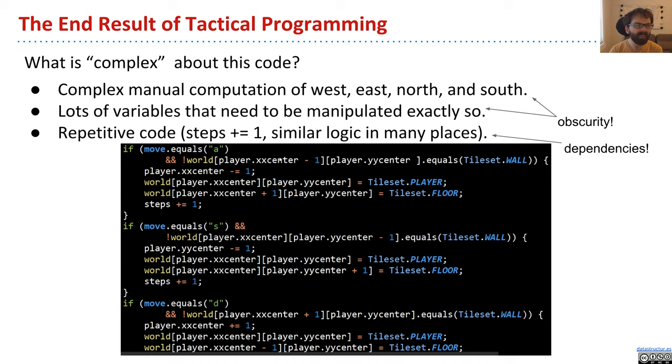I would say all of this complex manual computation of the west, the east, the north, and the south, and all these variables that need to be manipulated exactly so, that's a form of obscurity. It takes a lot of mental effort to really understand exactly what's going on here. And it's very easy for you to make mistakes.